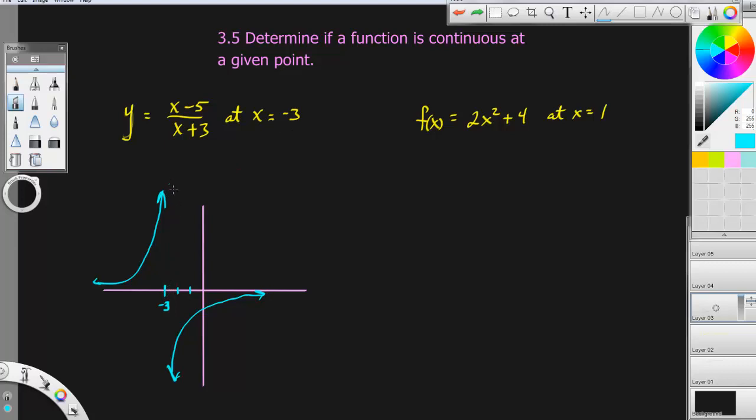When you do this, some calculators will actually put in a little line going down through here. Don't draw this dotted line. That is actually not part of it. This is called a vertical asymptote, A-S-Y-M-P-T-O-T-E, a vertical asymptote.